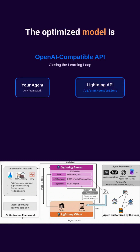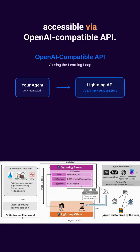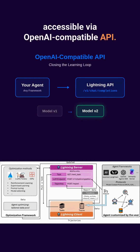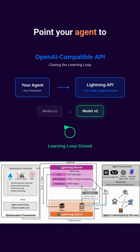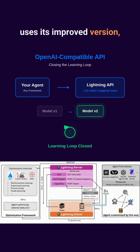The optimized model is accessible via an OpenAI-compatible API. Point your agent to it, and it automatically uses its improved version, closing the learning loop.